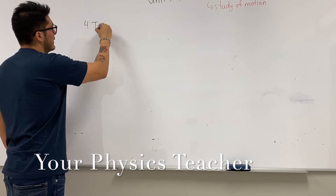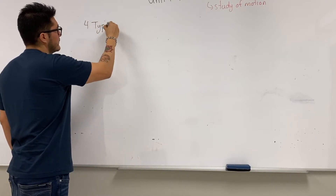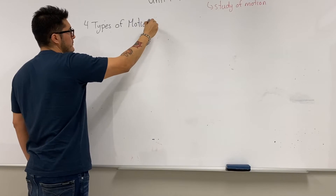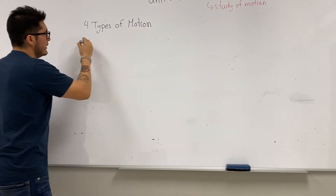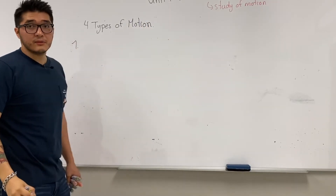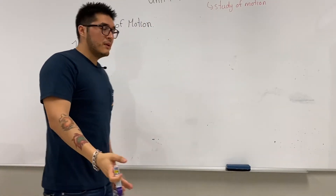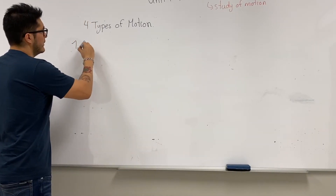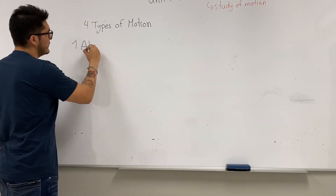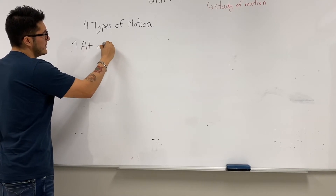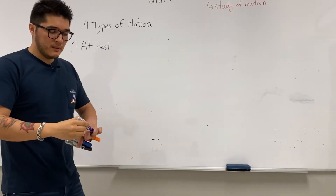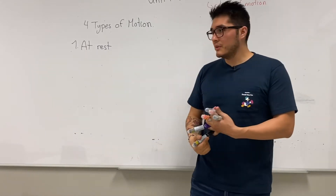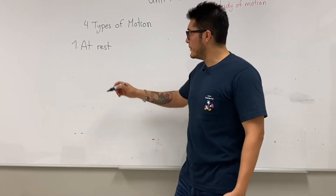So four types of motion. The first one is going to be the simplest one, so we're going to start off simple. We're going to draw later a motion diagram. For now, the first motion diagram we're going to describe is an object that happens to be at rest. We can use the motion diagram since you know how to draw them.